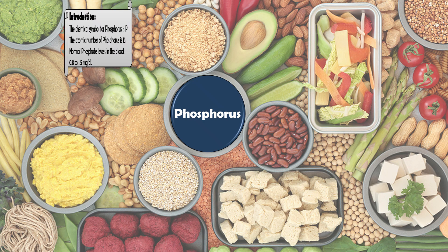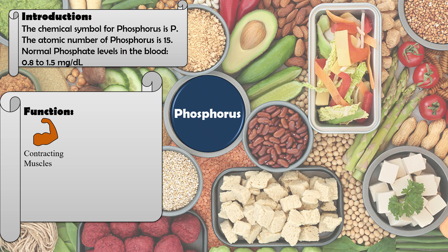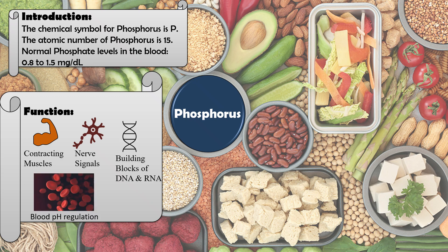The symbol for phosphorus is P and the atomic number is 15. The normal value in the blood is 0.8 to 1.5 mg/dL. Phosphorus is involved in contracting muscles, regulating nerve signals, and serves as a building block of DNA and RNA. It also regulates blood pH and performs immune functions.